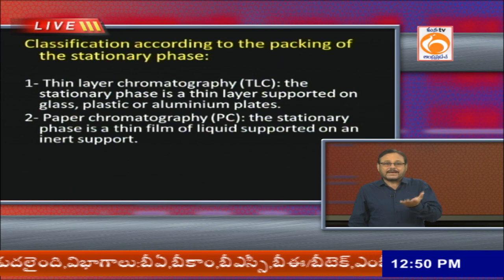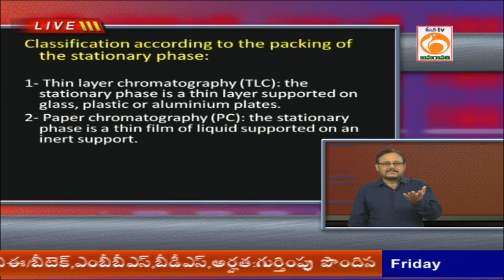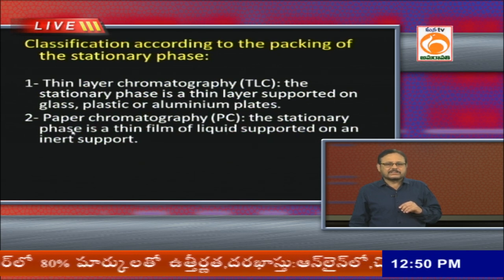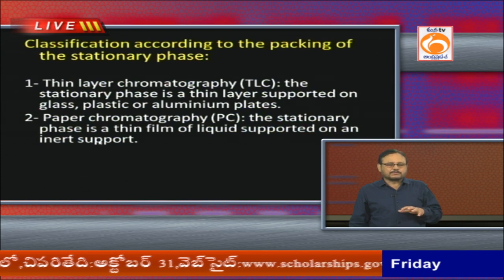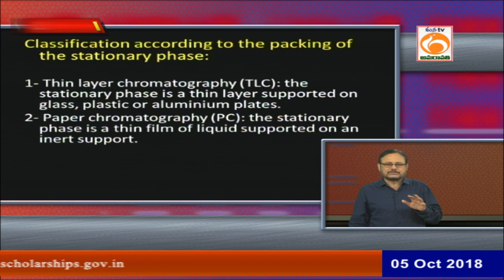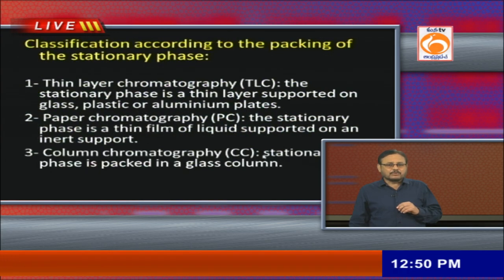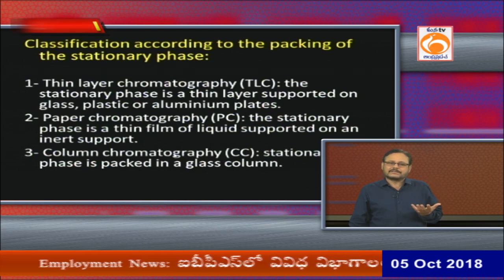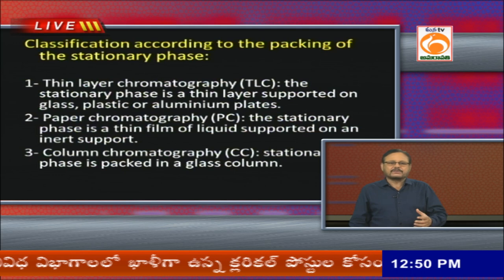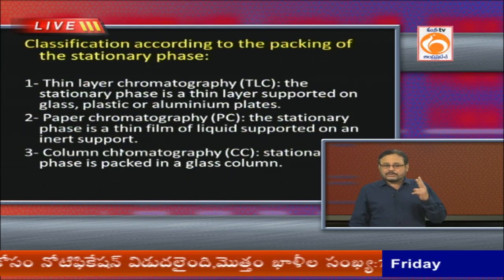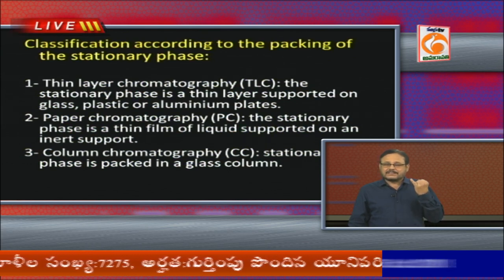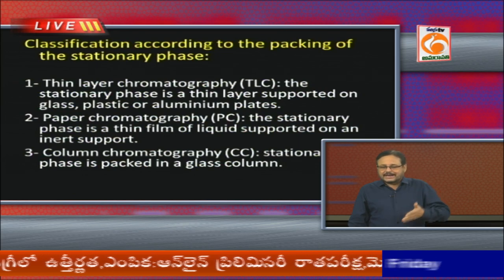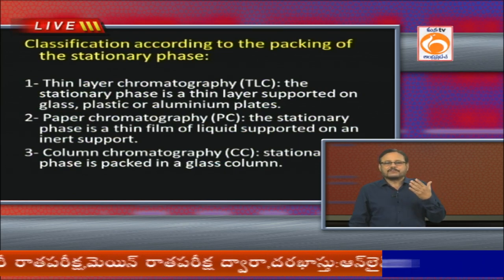Another classification is based on the packing of the stationary phase. If the stationary phase is a thin layer coated over glass, plastic, or aluminum plates, we call it thin layer chromatography. If a specially made filter paper is used as the stationary phase, it is paper chromatography. If the stationary phase is packed in a glass column, it is column chromatography.